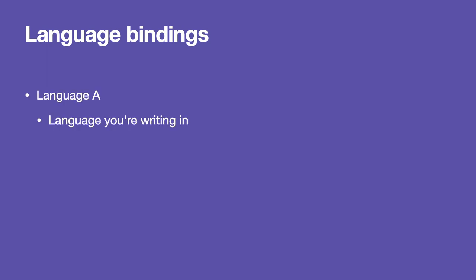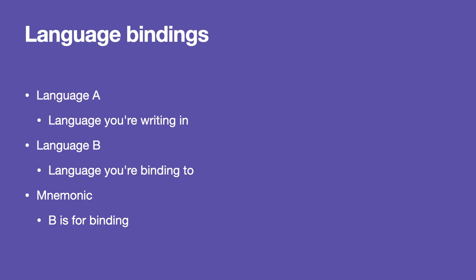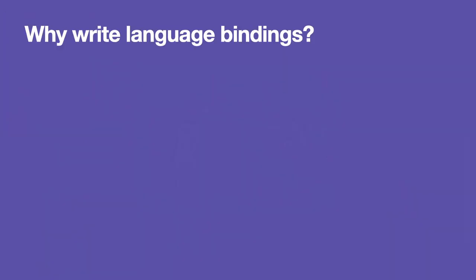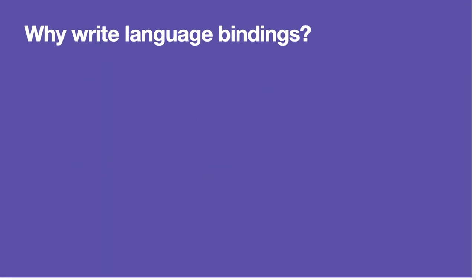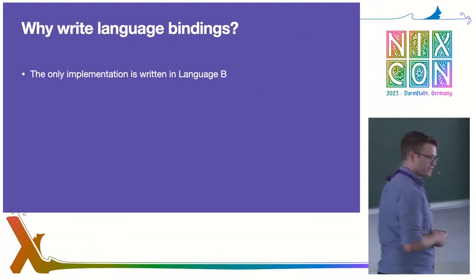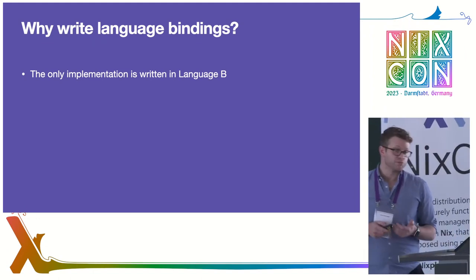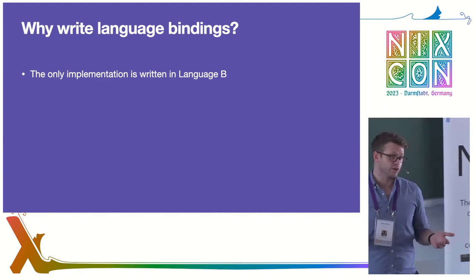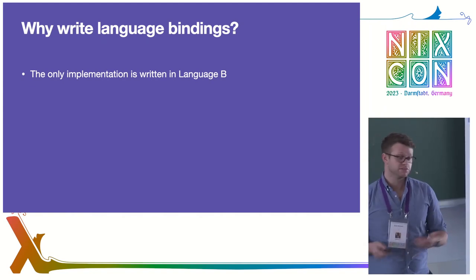Let's set aside Rust and C++ for a moment and think about why you would want to write language bindings in the first place. Let's say language A is the language you're writing in, and language B is the language you're binding to. And if you need a mnemonic, just remember B is for binding and C is for cookie. One reason is that the only implementation of something is written in language B — in this case, Nix — and if you want to use that functionality other than just shelling out to it, you write some language bindings.